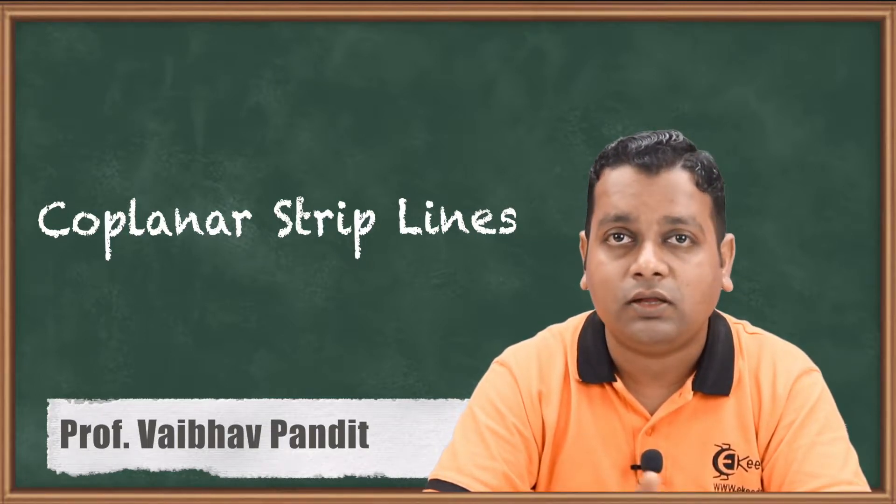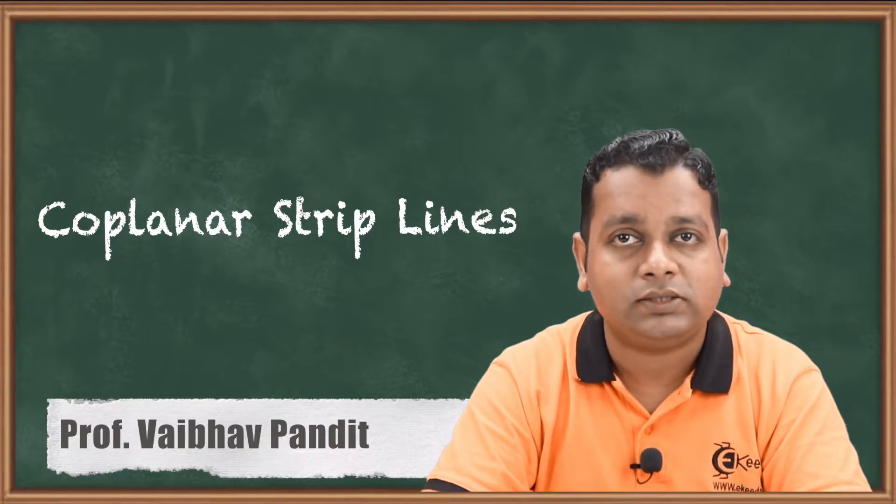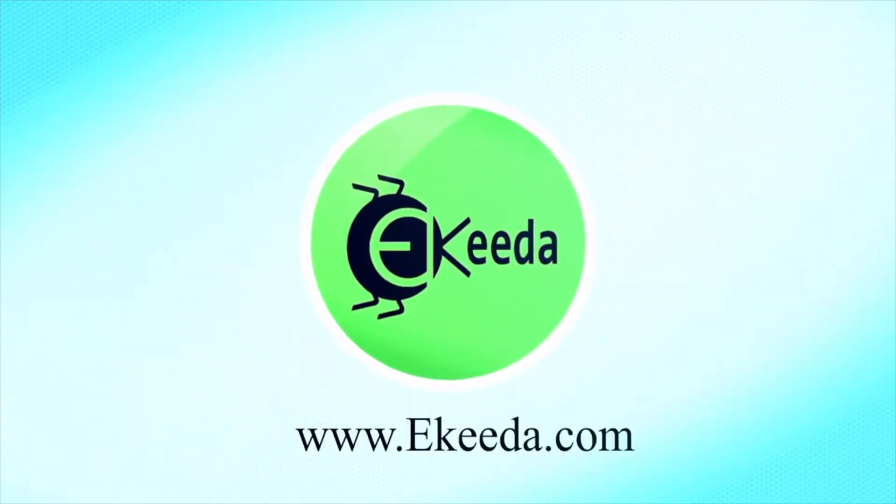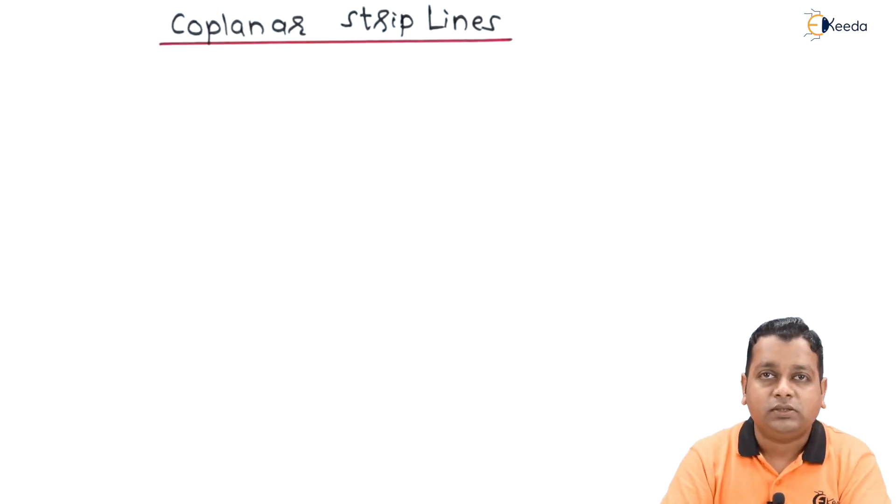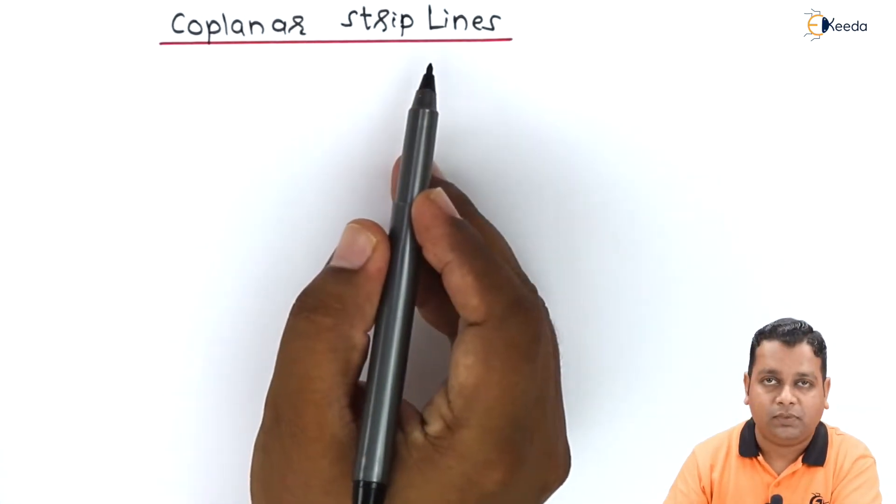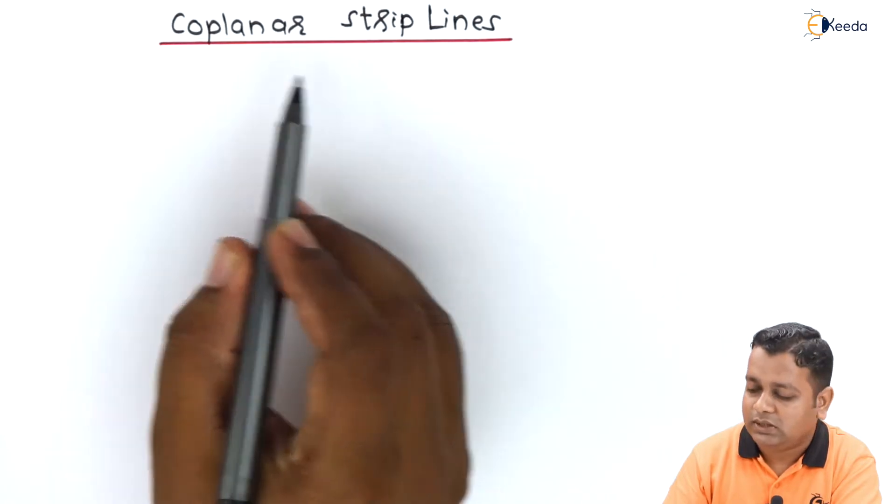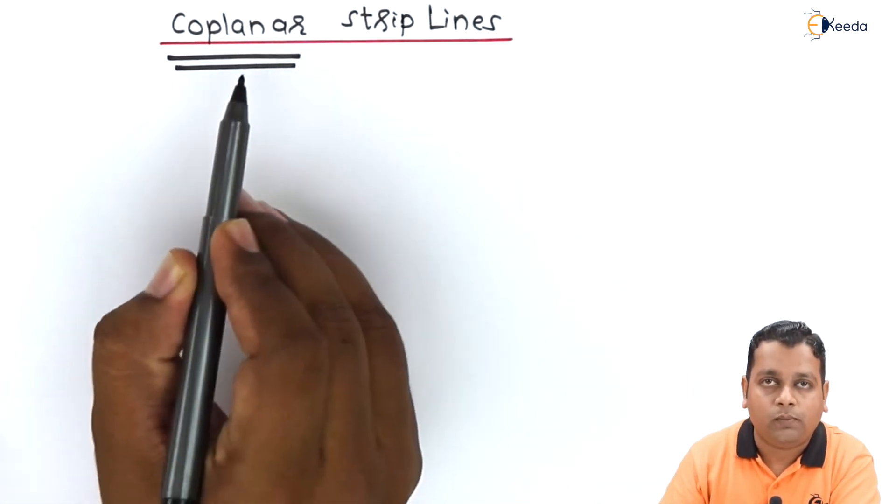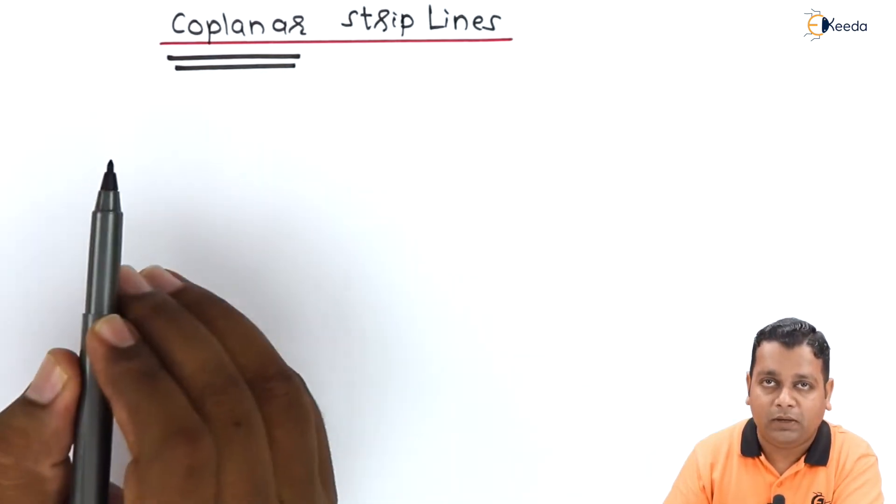Let us have an introduction to another form: coplanar strip lines. So here we start with our topic, coplanar strip lines. As the name suggests, here we have coplane, meaning the same plane.